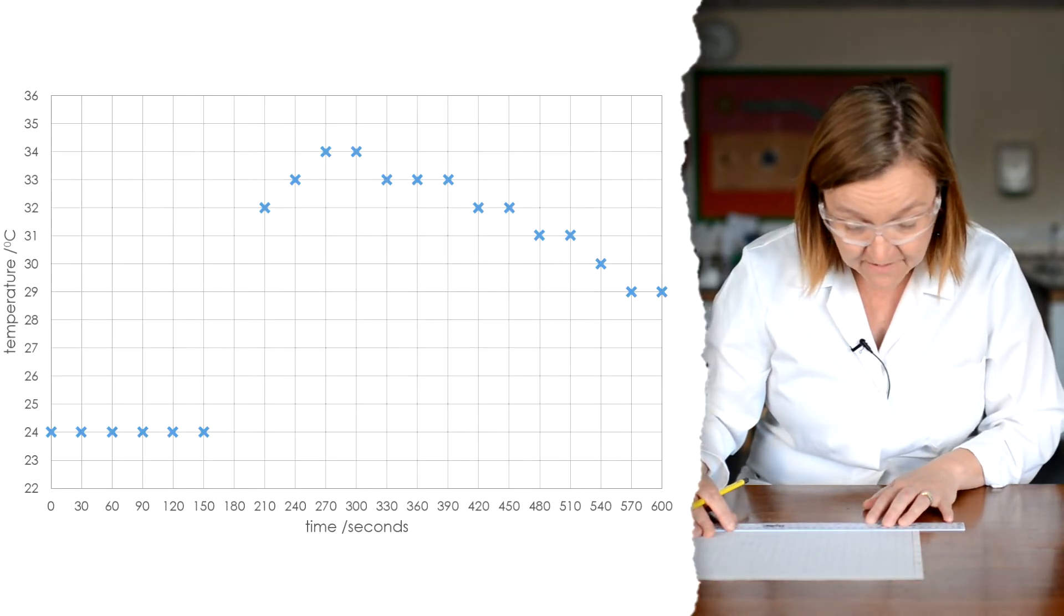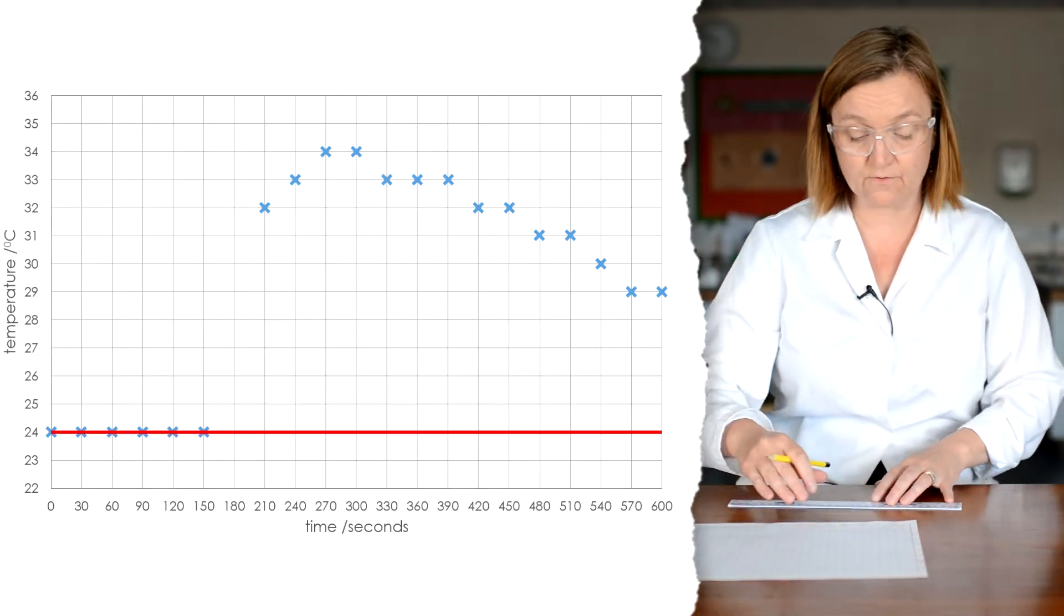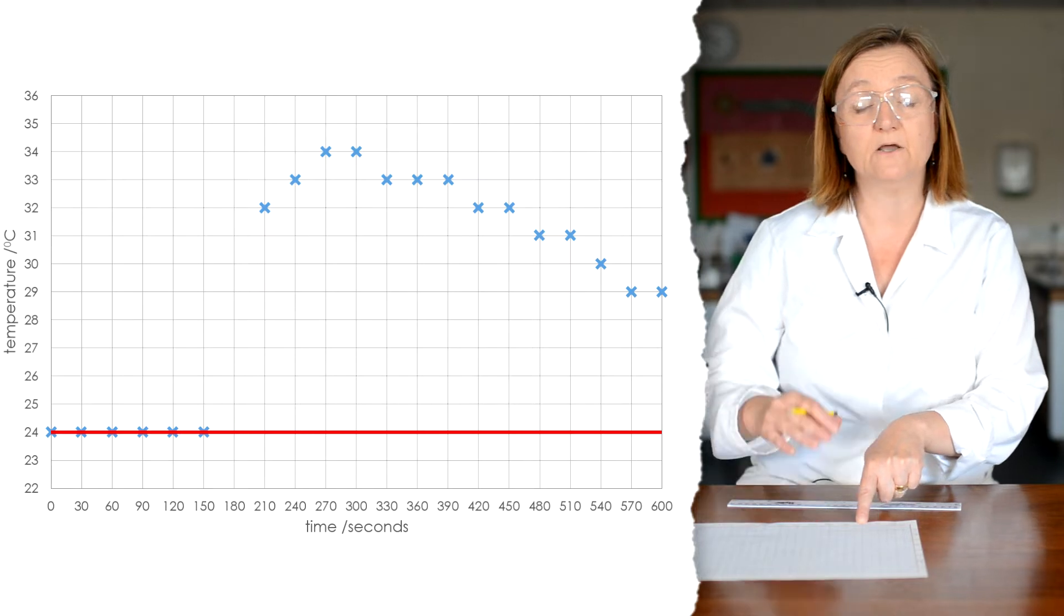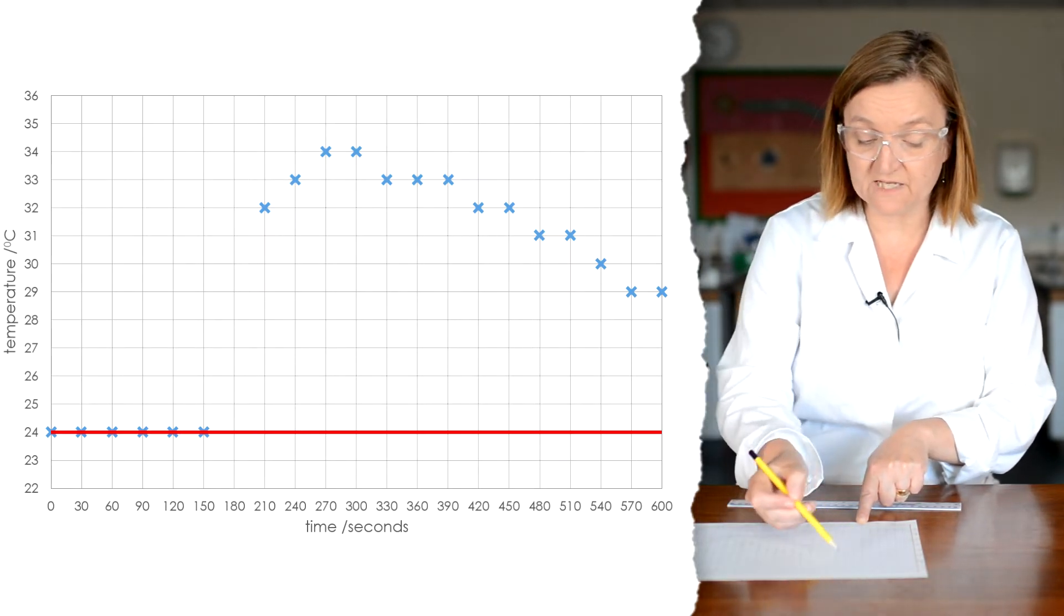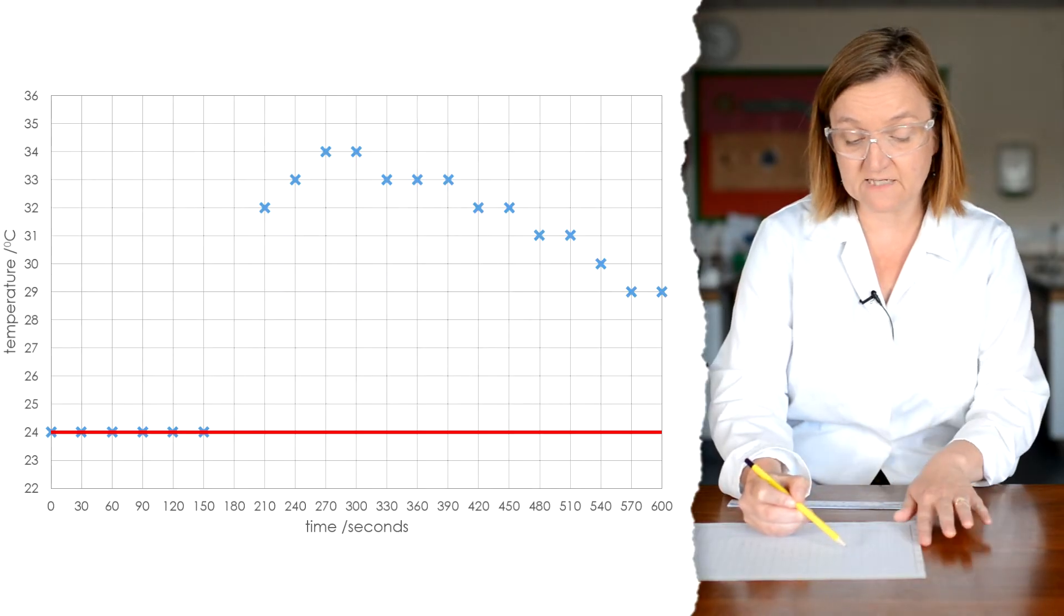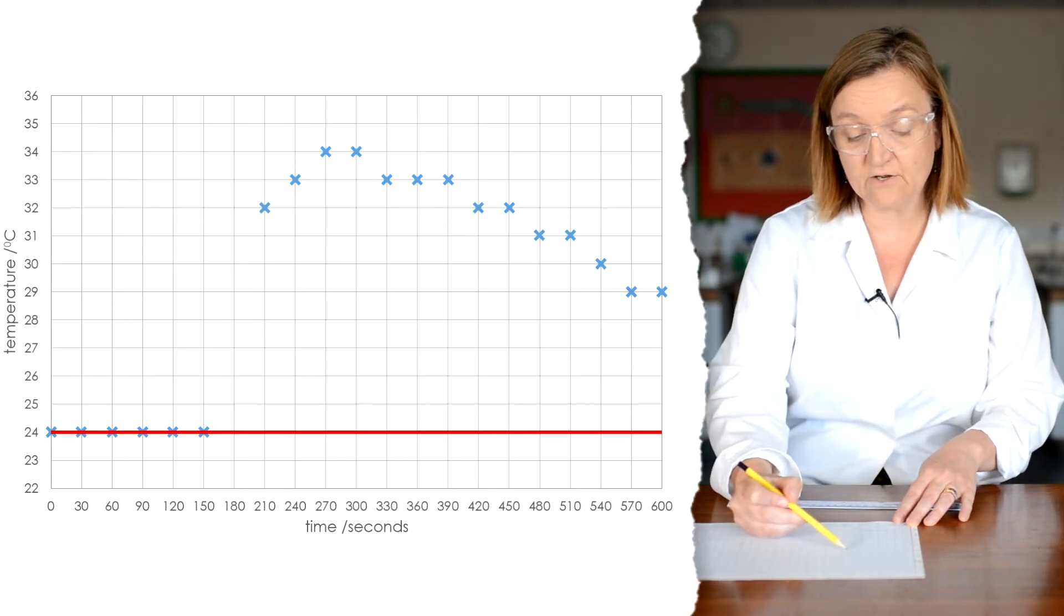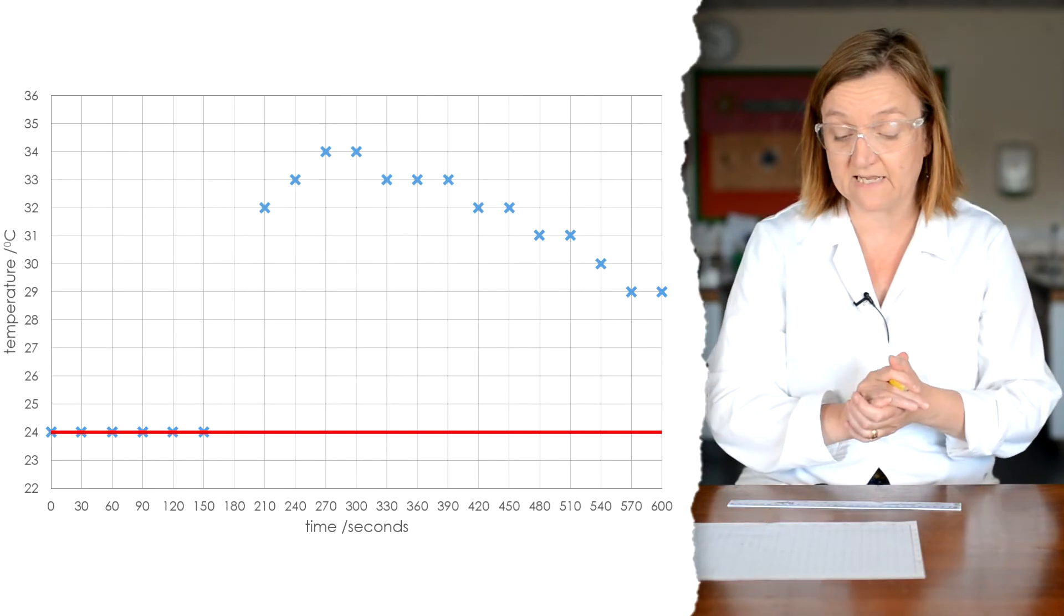And that was 24 degrees. So I'm just going to draw a straight line through those points there. So it goes past the three minute point, which is the point at which I added the acid. I've then got this part of the graph where you can see the temperature is increasing, and then it starts to decrease.